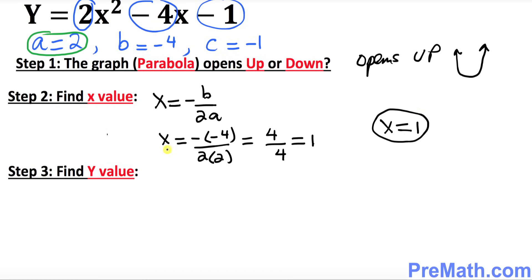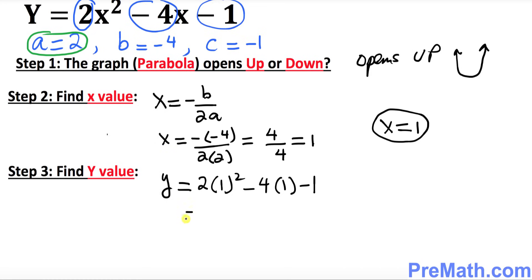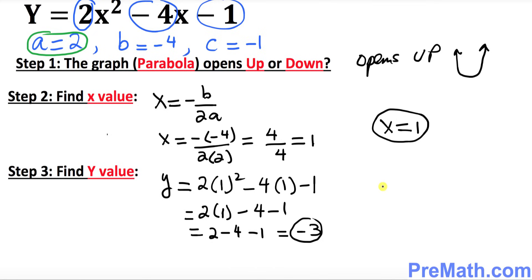In step 3 we want to find the y-value. We look at our original equation y equals 2x squared minus 4x minus 1, and wherever we see x we replace it with 1. So y equals 2 times 1 squared minus 4 times 1 minus 1. That gives us 2 minus 4 minus 1, which equals negative 3. So our y-value is negative 3.